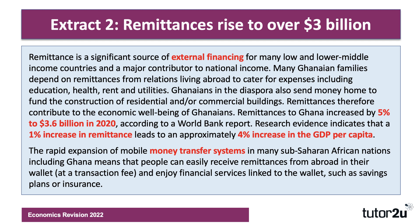Research evidence from the World Bank indicates that a 1% increase in remittances can lead to approximately a 4% increase in GDP per capita. This links to mobile money systems, which means that people in Ghana can easily receive remittances from overseas in their wallet, at a transaction fee, and it allows them to engage in savings plans and mobile insurance.